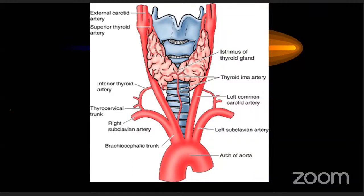The incidence of recurrent laryngeal nerve injury during thyroid surgery is less than one to two percent — it is very rare. However, if the recurrent laryngeal nerve is injured on both sides, both vocal cords become paramedian, very close to each other, and the patient can develop stridor and respiratory distress, potentially requiring permanent tracheostomy. If only one nerve is injured, there is only voice disturbance.